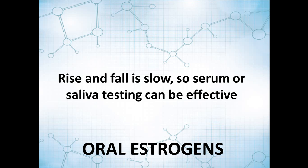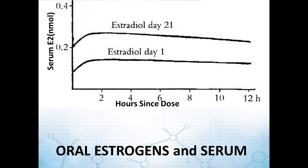The rise and fall of estrogens following oral supplementation is nice and slow, so serum and saliva testing can be effective — unlike with progesterone. In this study, we can see the baseline value before supplementation. After taking the hormone for a couple of weeks, the baseline value 24 hours after the last dose is elevated. And as the patient takes it throughout the day, there's a nice gentle up-and-down curve. So whether you test early or later in the day, you should get about the same value.